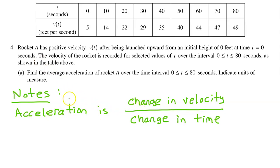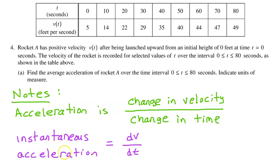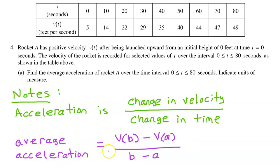Here are some notes you will need to understand Part A. Acceleration is the change in velocity divided by the change in time. Instantaneous acceleration can be expressed as a derivative, dv/dt. Average acceleration will be expressed like an old-school slope where we do y minus y over x minus x — the change in velocity, velocity at time b minus velocity at time a, divided by the change in time, time b minus time a.